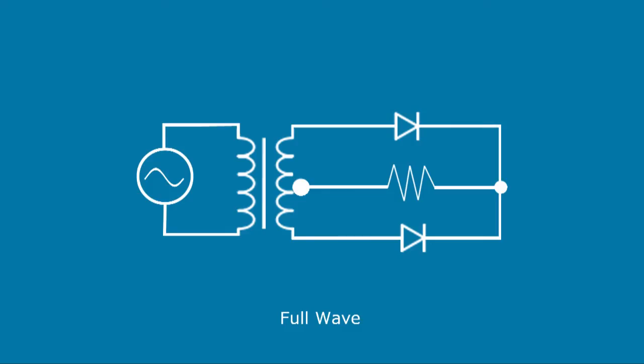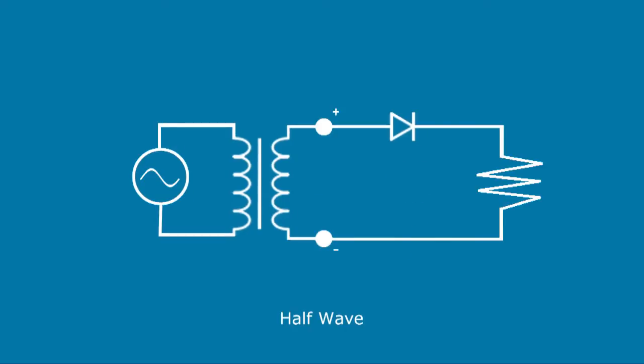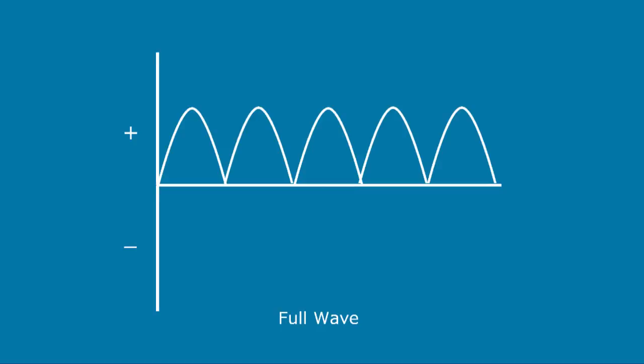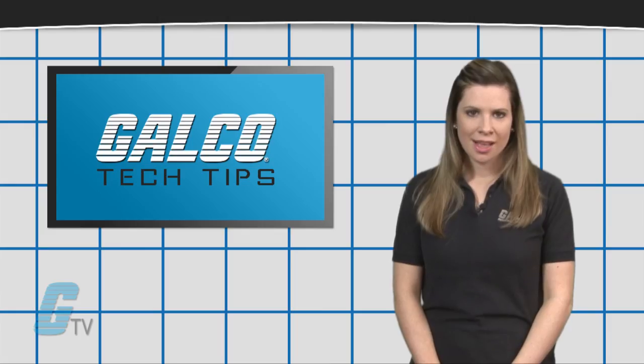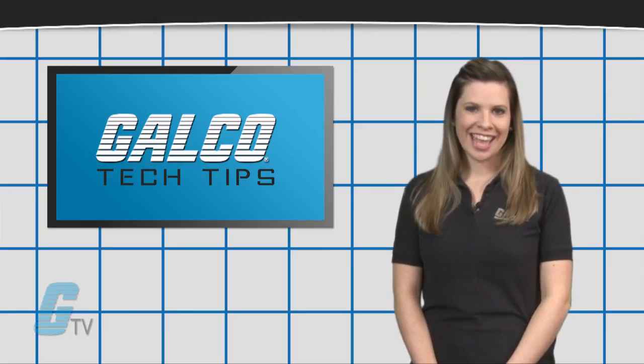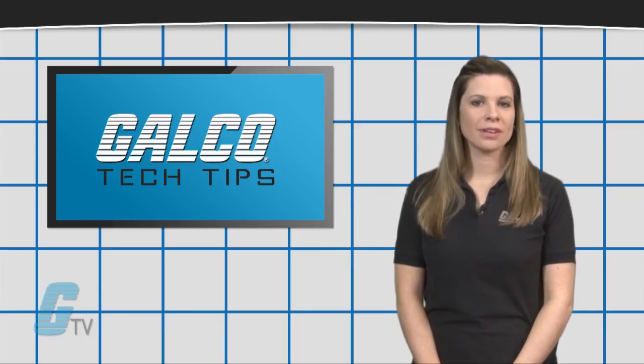The full wave circuits use twice as many diodes for rectification when compared to a half wave circuit of similar output. Full wave rectification doesn't block off one side of the AC current and instead converts both sides to a single polarity with the use of a group of diodes. This reduces the ripple and can allow for a greater output of volts.